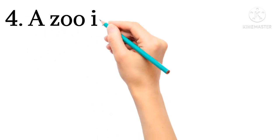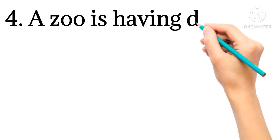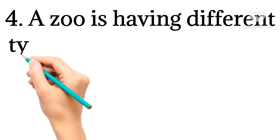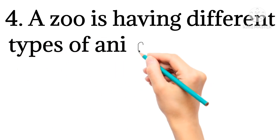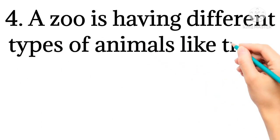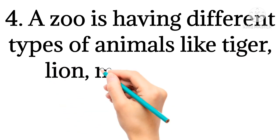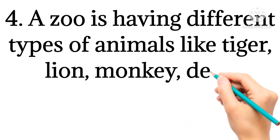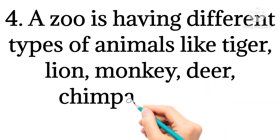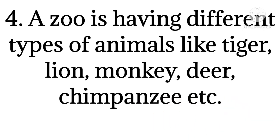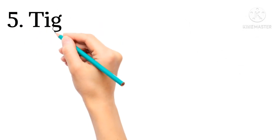Fourth, a zoo is having different types of animals like tiger, lion, monkey, deer, chimpanzee, etc.